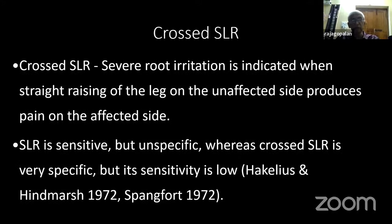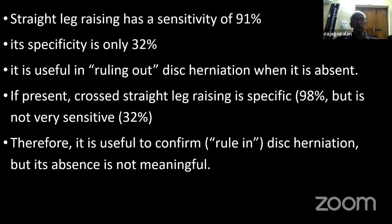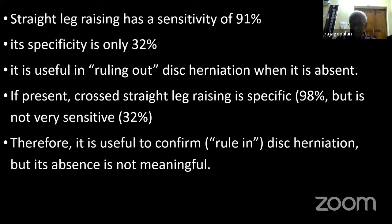Crossed SLR is very important. When you do the normal side, you get positive on the affected side — that is the standard one. If you do the opposite side and you get a positive SLR, that is a crossed SLR. SLR is very sensitive — 91% sensitivity — but it is not specific; specificity is only 32%. It can be due to so many causes. Crossed SLR is positive in fewer cases, but it is highly diagnostic — 98% specific. So if you get a crossed SLR positive, you can be sure there is nerve root compression.